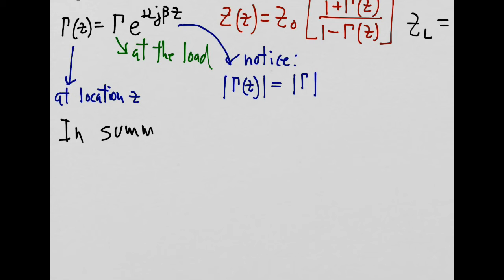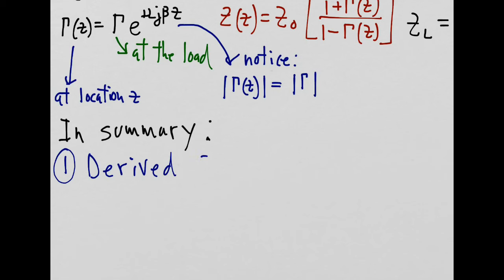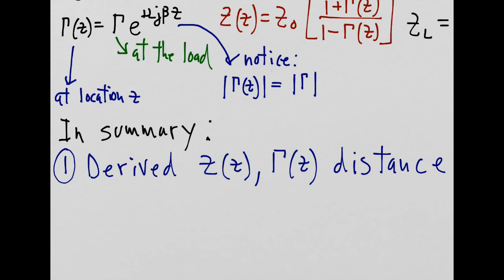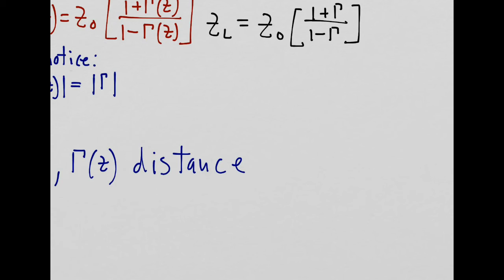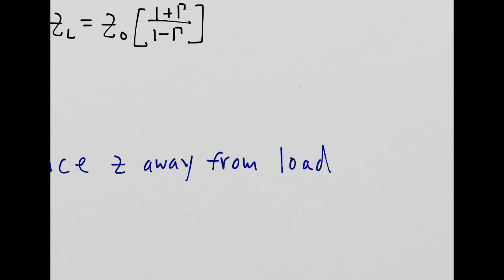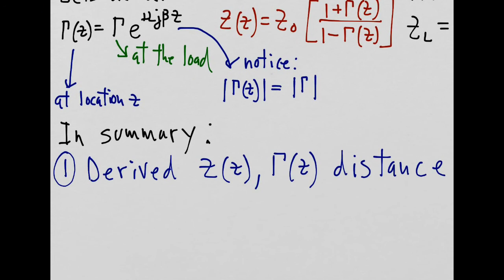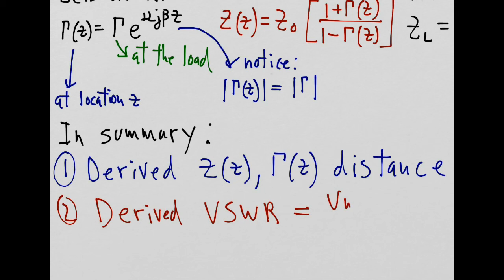In summary, we derived expressions for the impedance and the reflection coefficient as a function of distance away from the load impedance. We also defined the parameter VSWR, the voltage standing wave ratio, as being equal to the maximum voltage on the transmission line divided by the minimum voltage.